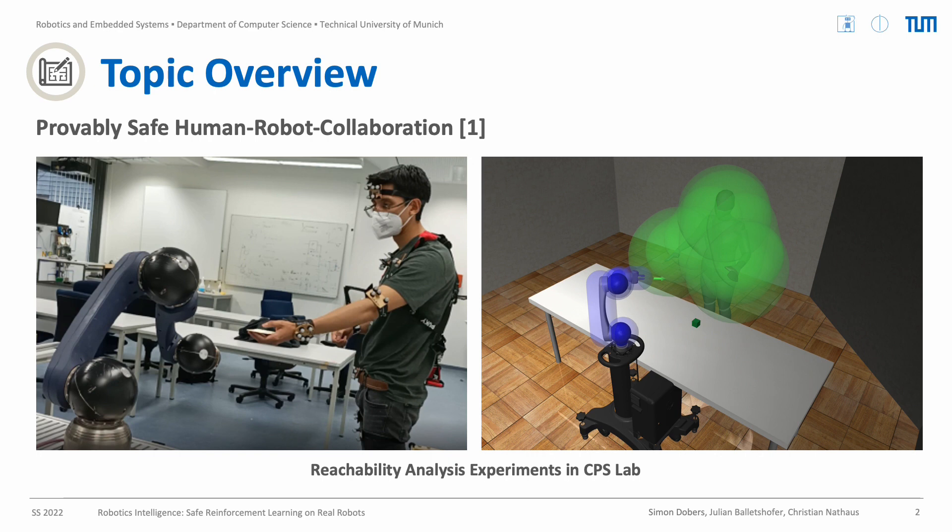We track the human position with the Vicon camera system using markers, which you can see on the left. We then reconstruct the human position from those markers and compute a reachable set of the human. We also compute a reachable set of the robot for the next time step.